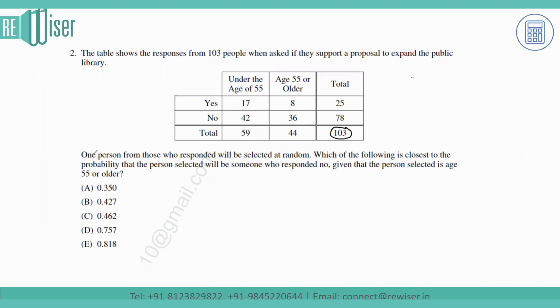The question says one person from those who responded will be selected at random. Which of the following is closest to the probability that the person selected will be someone who responded no?